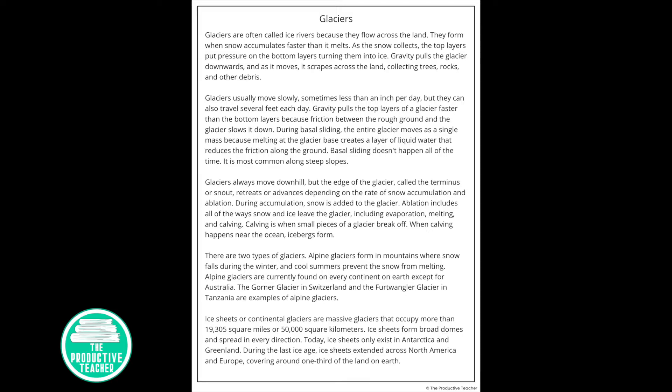There are two types of glaciers. Alpine glaciers form in mountains, where snow falls during the winter and cool summers prevent the snow from melting. Alpine glaciers are currently found on every continent on Earth, except for Australia.